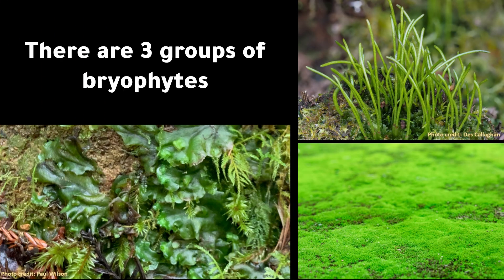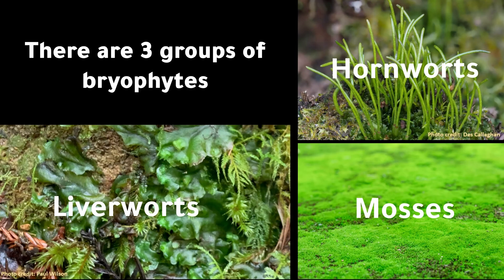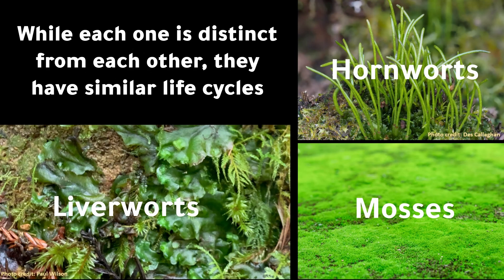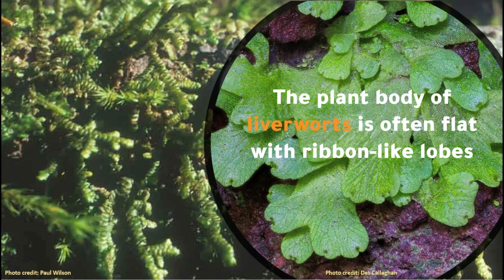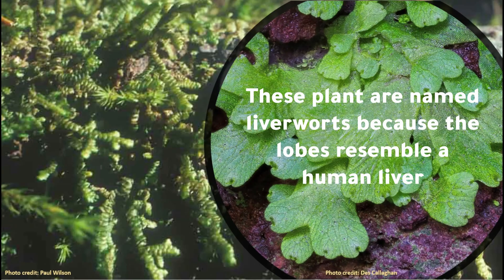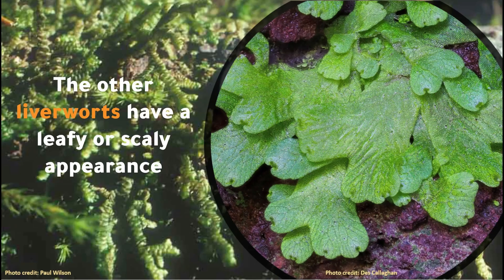There are three groups of bryophytes and they include mosses, hornworts, and liverworts. While each one is distinct from each other, they have similar life cycles. The plant body of liverworts is often flat with ribbon-like lobes. These plants are named liverworts because the lobes resemble a human liver. The other liverworts have a leafy or scaly appearance.